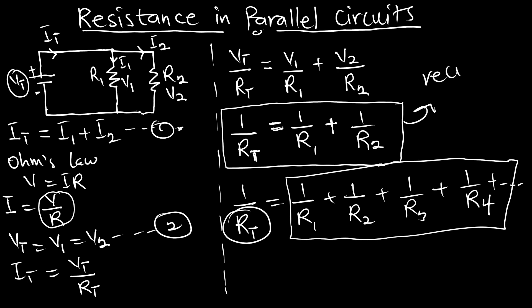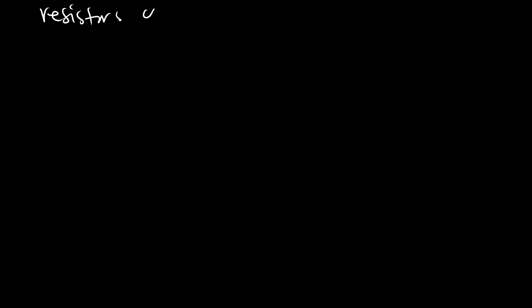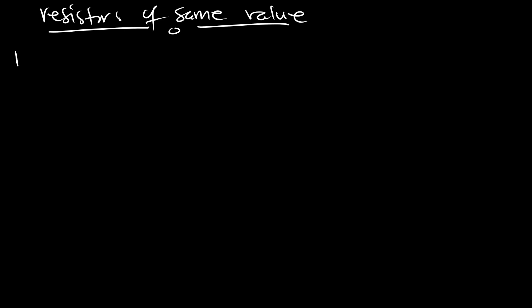There is a shortcut for resistors of the same value. If I have same-value resistors arranged in parallel, I need not worry about the reciprocal formula. The total resistance for same-value resistors is R over n.